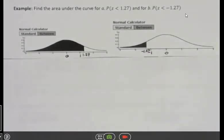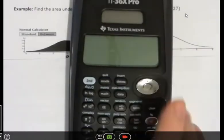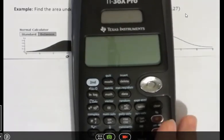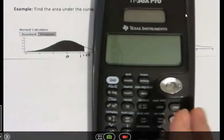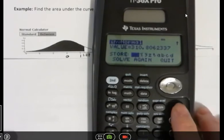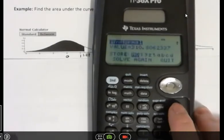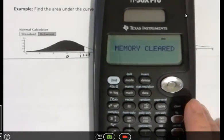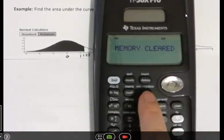So how you do that on your calculator, first of all, if you've done anything in your calculator, you may want to clear things out. You can hit on and then clear twice, and it's going to clear all the memory. So then we're going to go to second function data,